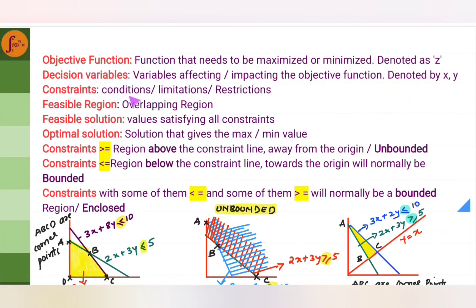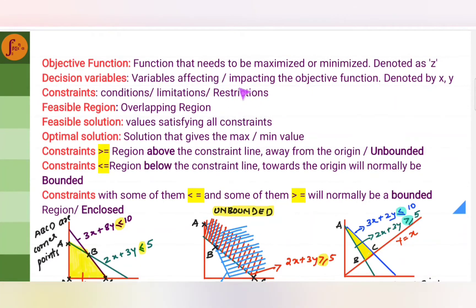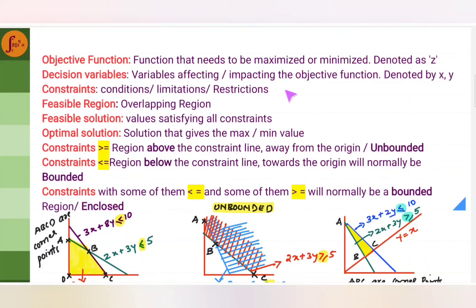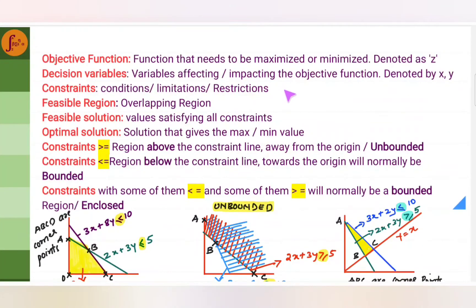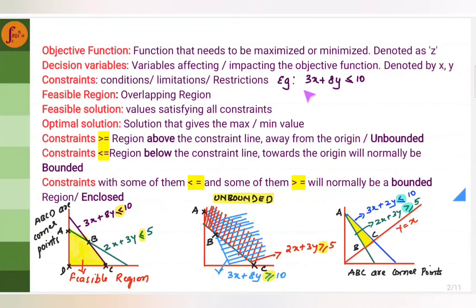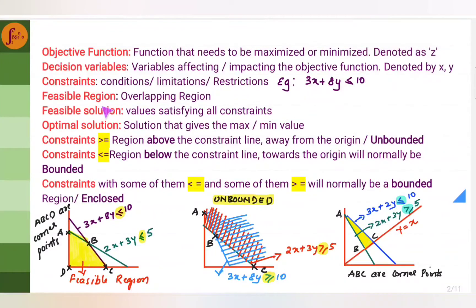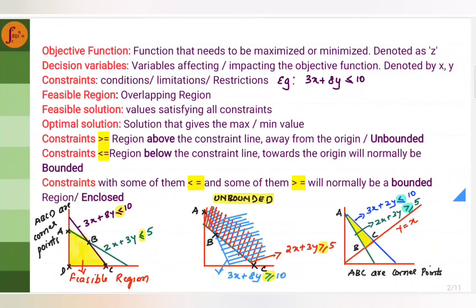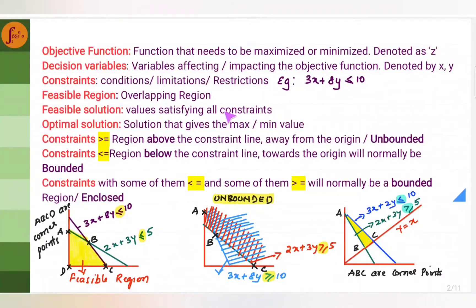Constraints: there are limited resources — we don't have an infinite amount. For example, there are limited people and limited space. An employee can work only 8 hours per day; a machine can run only 12 hours per day; they can manufacture only a certain amount of products or transport only a certain number of packages. Constraints are represented using linear inequalities — that is, less than or greater than. We also have the feasible region: when plotting the graph and shading the constraints, there is an overlapping region, and that is called the feasible region. Feasible solution refers to all the values that satisfy these constraints.